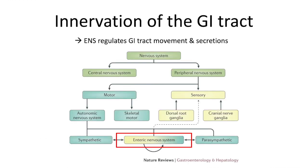Now, I will focus on the innervation of the whole gastrointestinal tract. The enteric nervous system, or the mini brain gut, belongs to the autonomic division and has both parasympathetic and sympathetic portions, as we can see in the diagram.